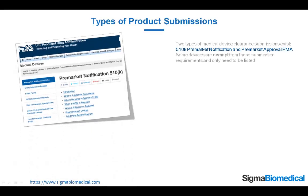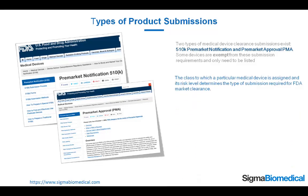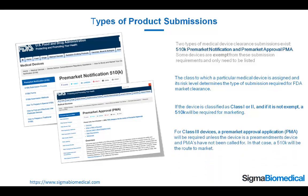Types of Product Submissions. Two types of medical device clearance submissions exist: 510k Pre-Market Notification and Pre-Market Approval (PMA). Some devices are exempt from these submission requirements and need only to be listed. The class to which a particular medical device is assigned and its risk level determines the type of submission required for FDA market clearance. If the device is classified as Class 1 or 2, and if it is not exempt, a 510k will be required for marketing. For Class 3 devices, a pre-market approval application will be required unless the device is a pre-amendments device and PMAs have not been called for — in that case, a 510k will be the route to market.